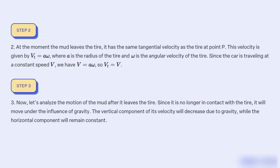3. Now, let's analyse the motion of the mud after it leaves the tyre. Since it is no longer in contact with the tyre, it will move under the influence of gravity. The vertical component of its velocity will decrease due to gravity, while the horizontal component will remain constant.